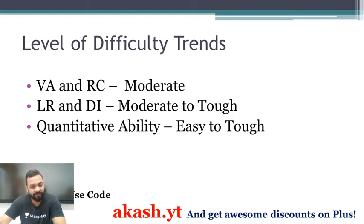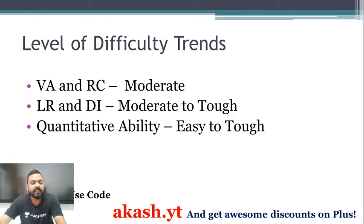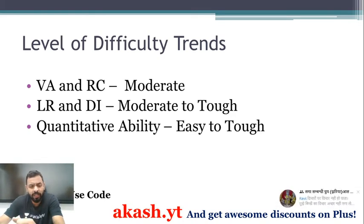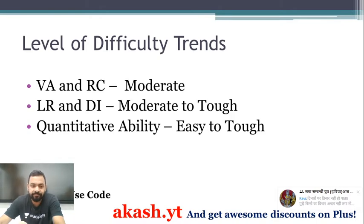For Quantitative Ability, the difficulty has varied over the years. In 2018 and 2019, QA was tough. If the paper is difficult, Geometry and Algebra tend to be the toughest topics, while Arithmetic by itself is not a very tough topic. Quantitative Ability difficulty can vary, so you need to manage your approach accordingly.